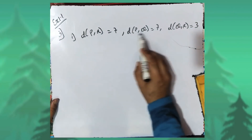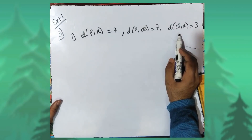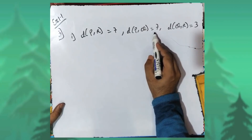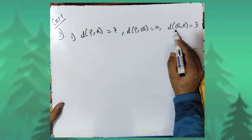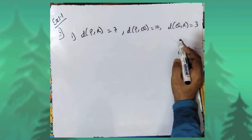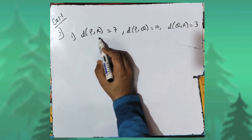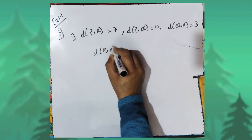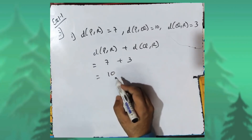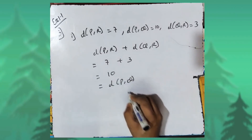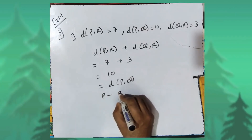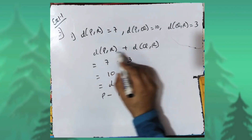In the third question, three distances are given between points P, Q and R. We have to find which point is between the other two. Distance PR is given as seven, distance PQ is given as ten, and distance QR is given as three. We add the two smaller distances: distance PR plus distance QR equals seven plus three, which equals ten. This equals distance PQ. Therefore, points P, Q, R are collinear and point R is between P and Q, because R is common in the two smaller distances.